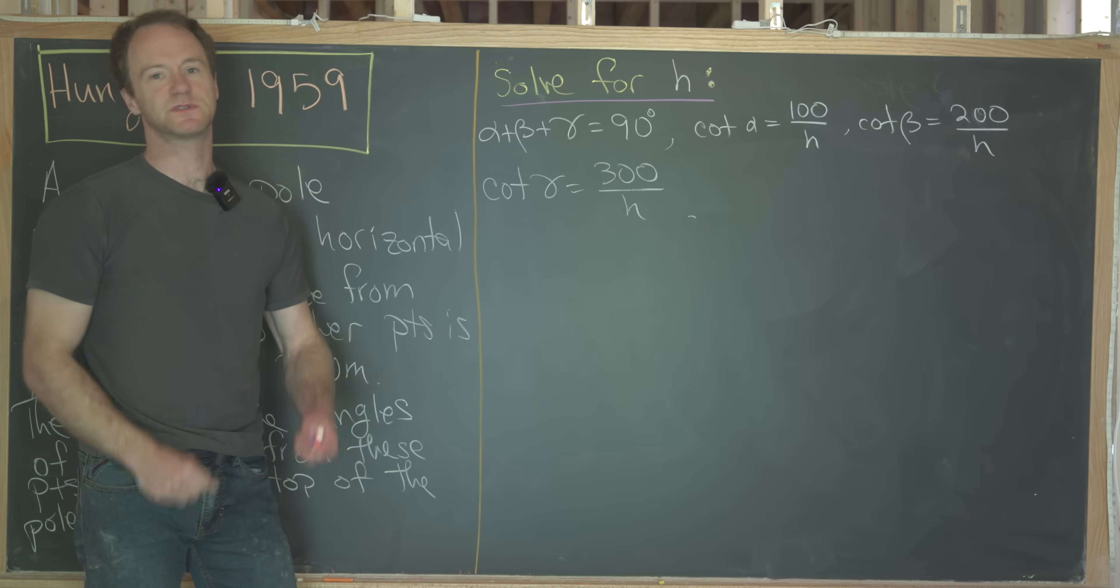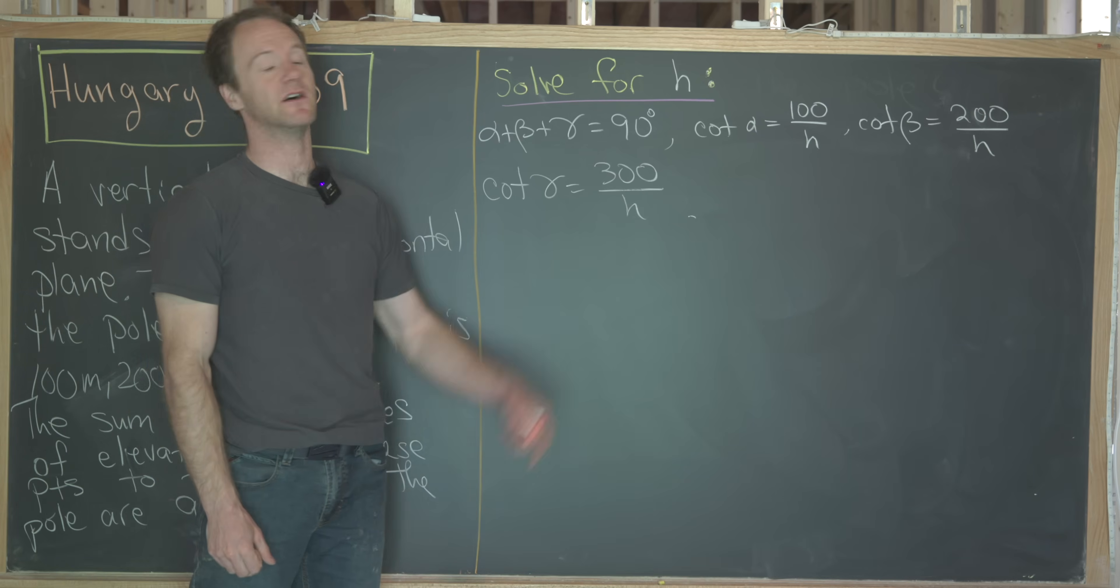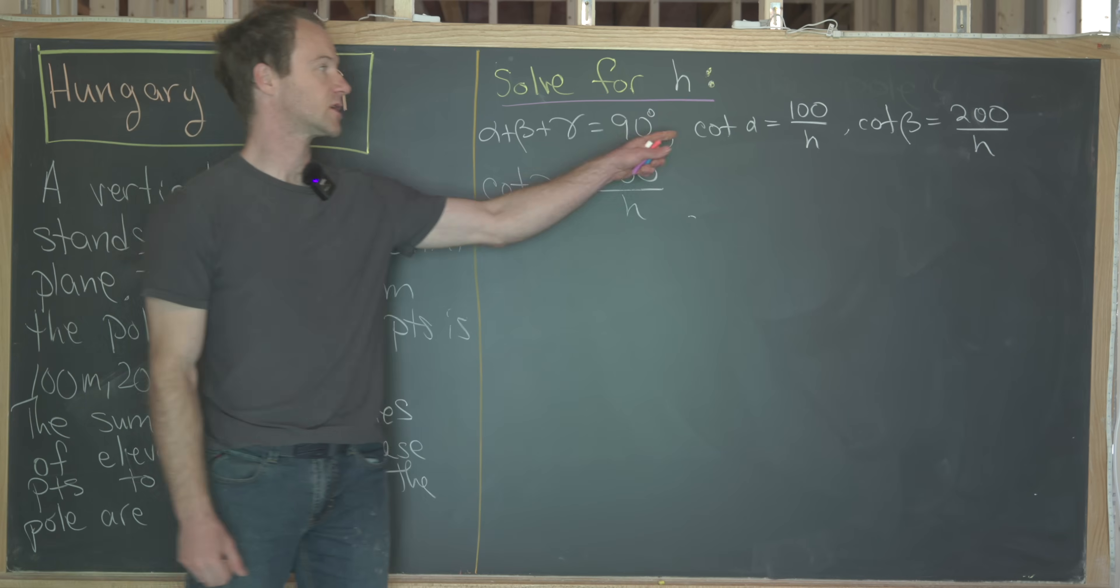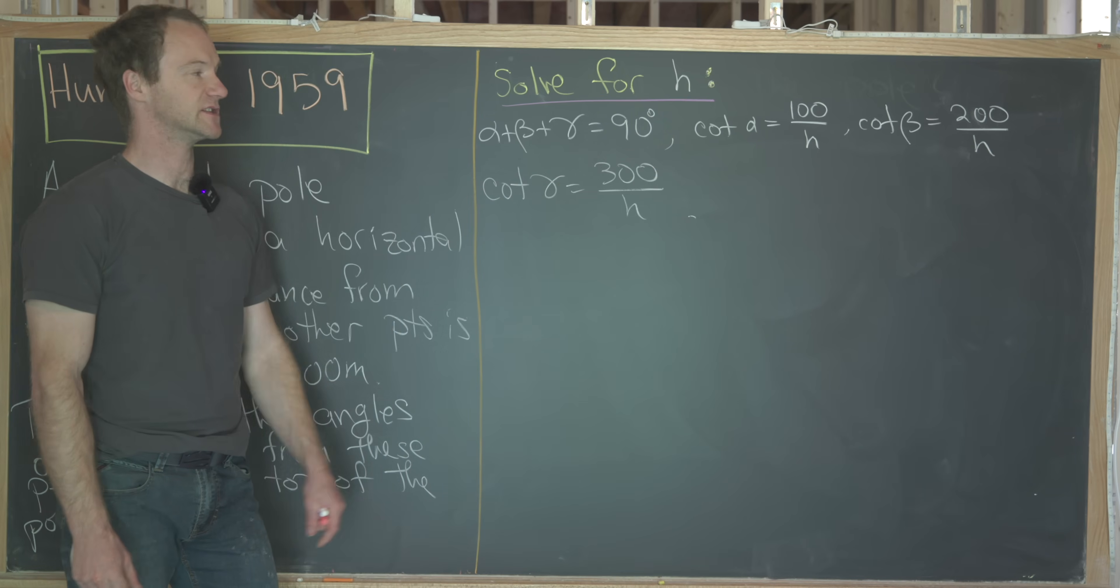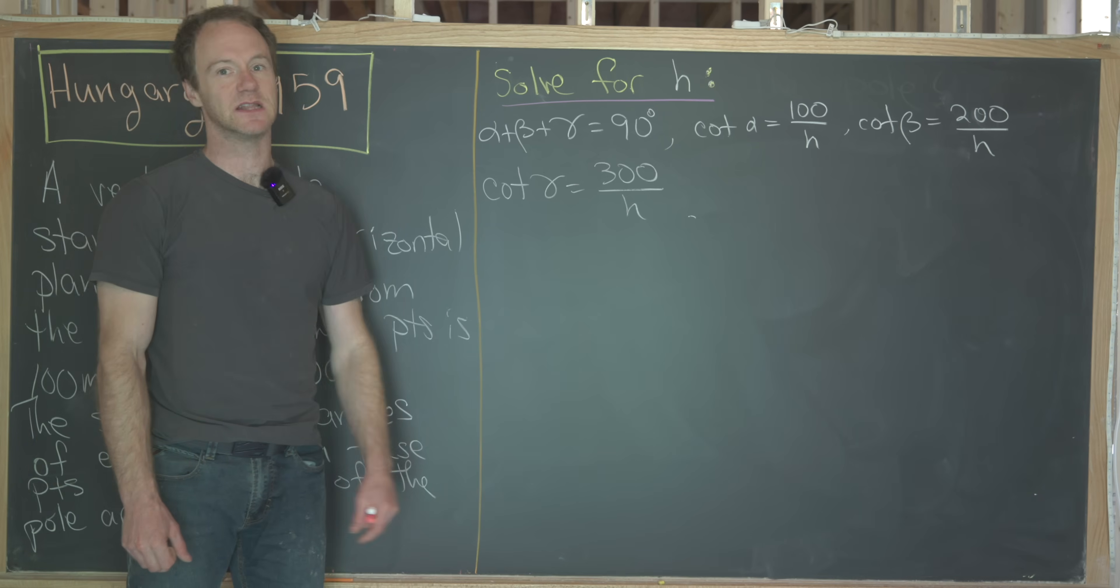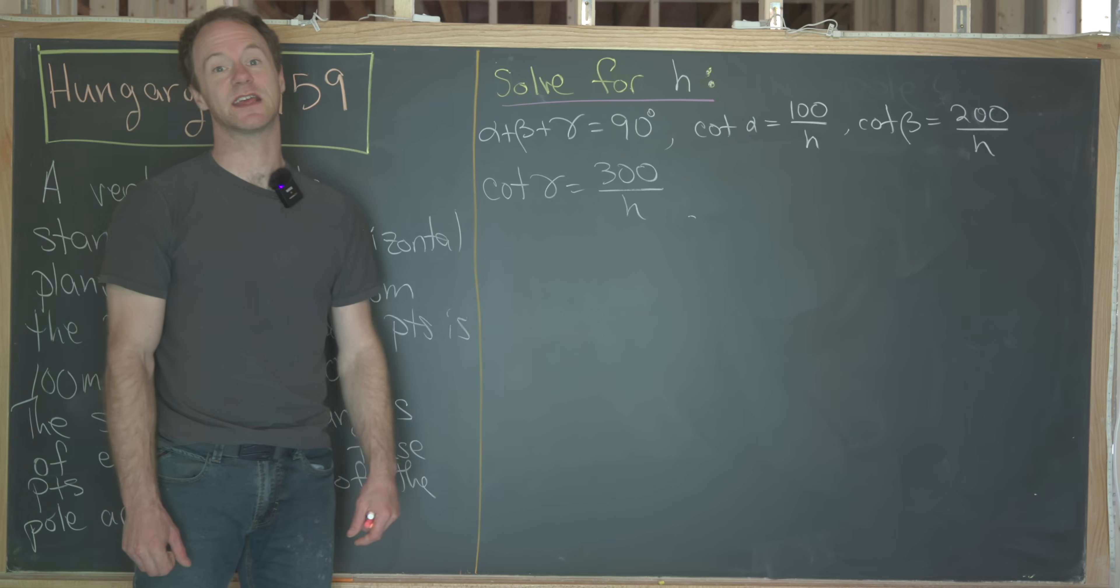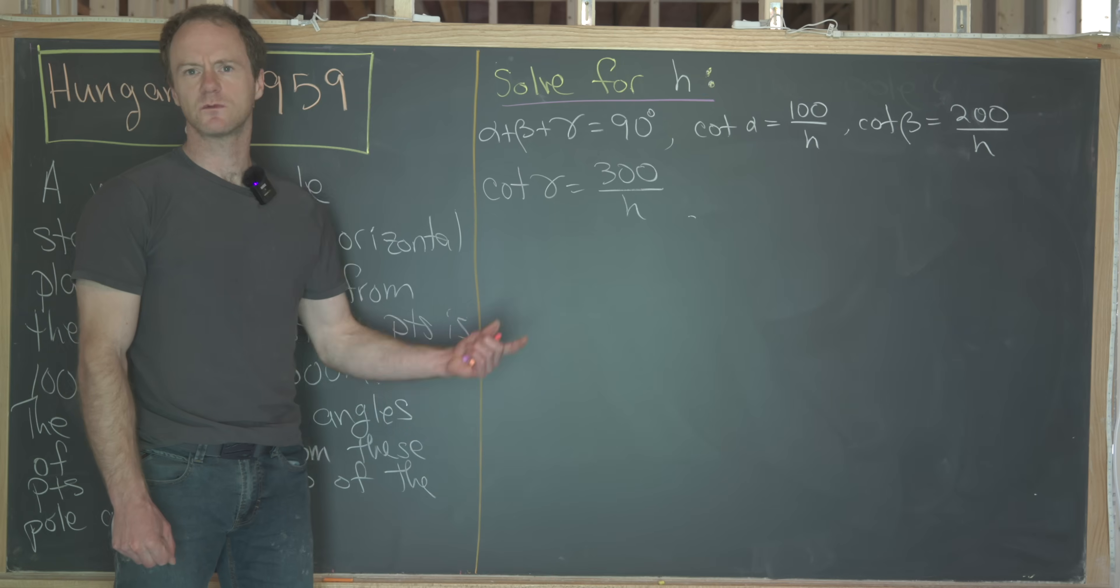Let's bring this to the top and we'll work on solving this system of equations. On the last board, we built up some notation and we changed our problem to solving a system of equations. In fact, we only need a value of one of the variables. We need h, which was the height of this pole. We've got these four equations. Alpha plus beta plus gamma is 90. Cotangent of alpha is 100 over h, cotangent of beta is 200 over h, and cotangent of gamma is 300 over h. Now there's probably a lot of different ways to finish this off, but looking at this problem, I really think it was built around something known as the cotangent triple angle formula. So let's get that on the board so we can see it.